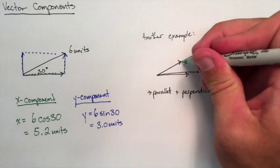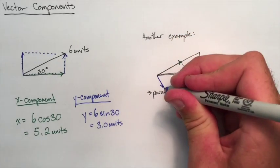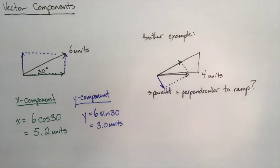So what that's going to look like, we'll draw it in. Here's the one that's parallel. That's the component parallel to the ramp. And then the component perpendicular to the ramp. So if we take a look, we want to find the components.